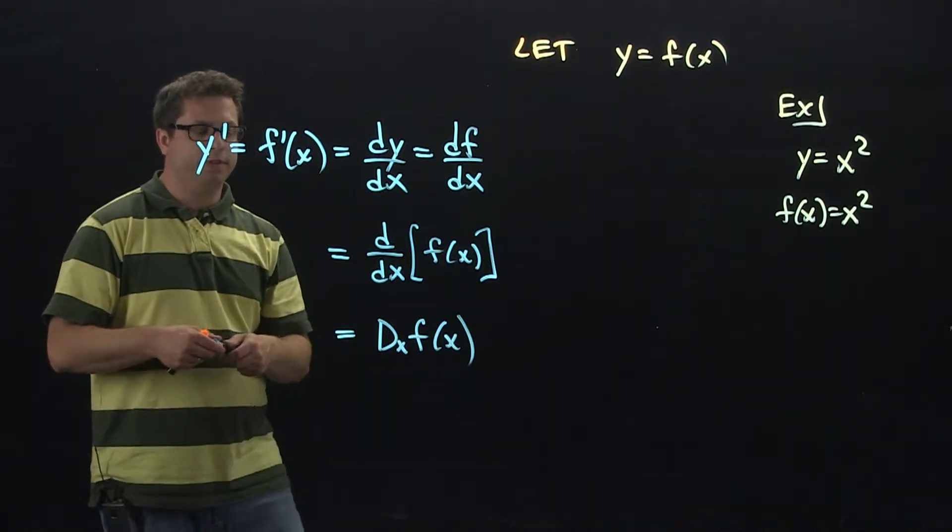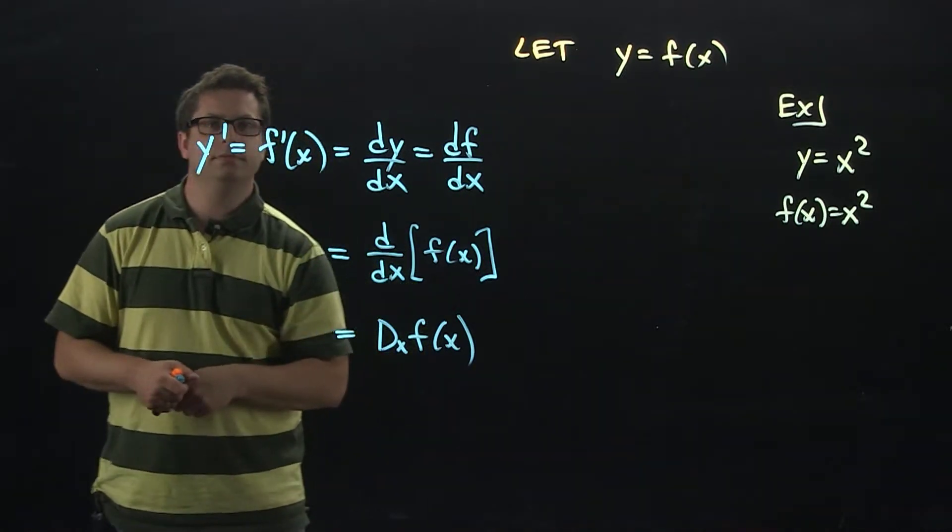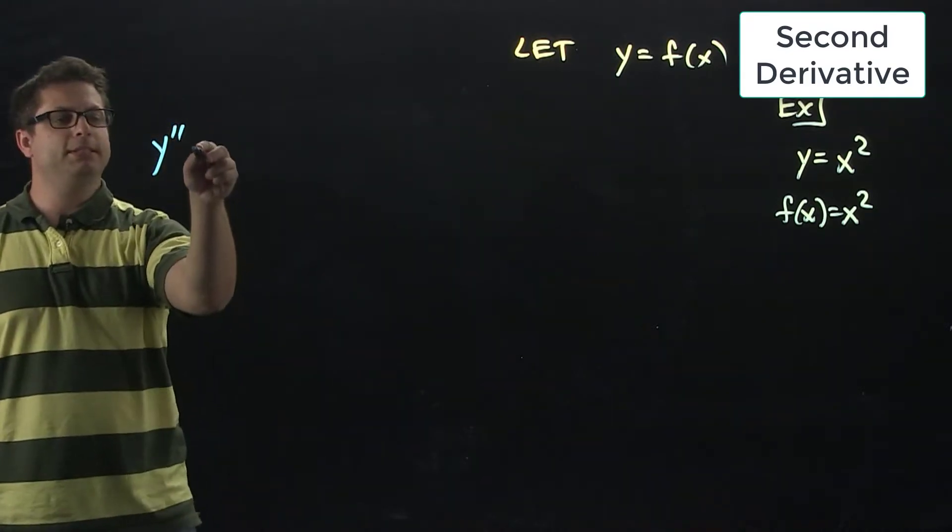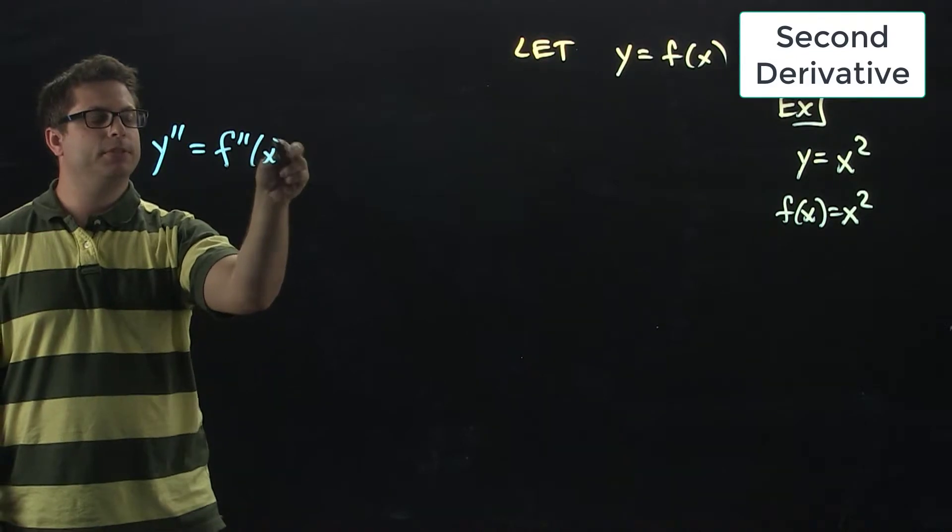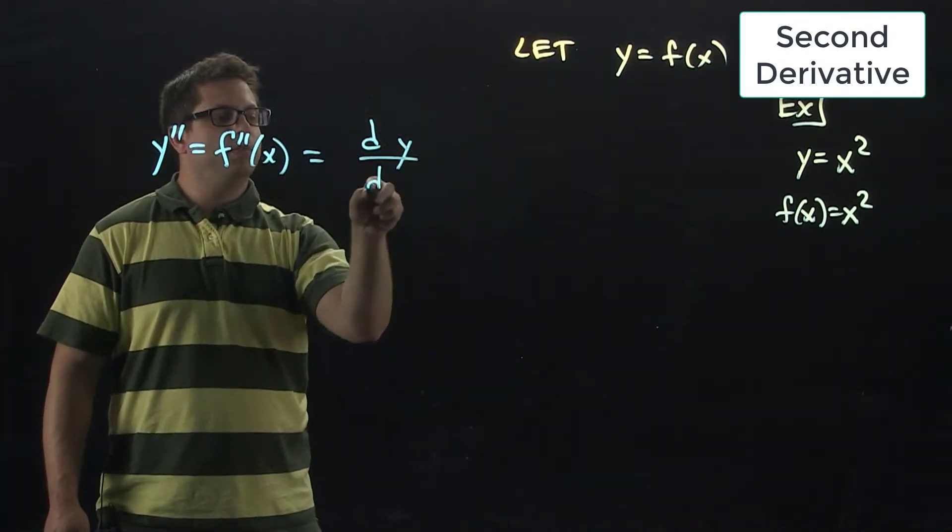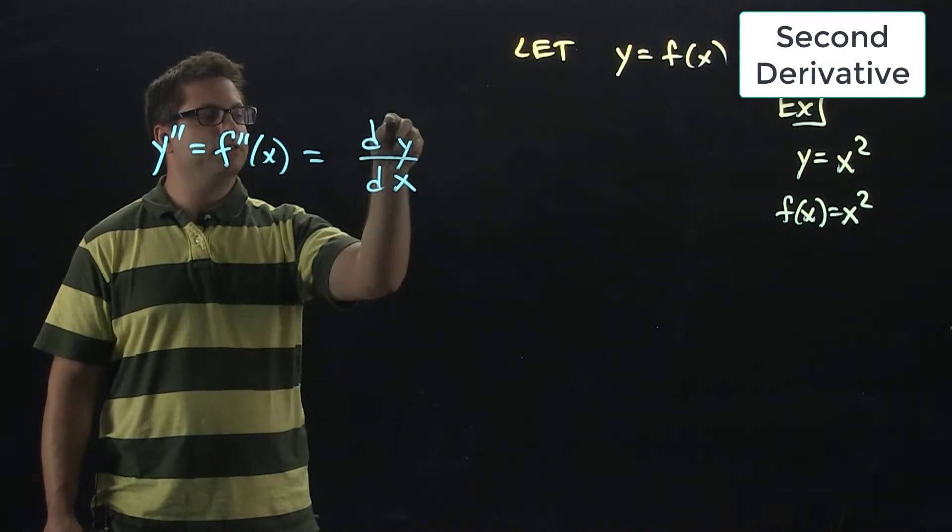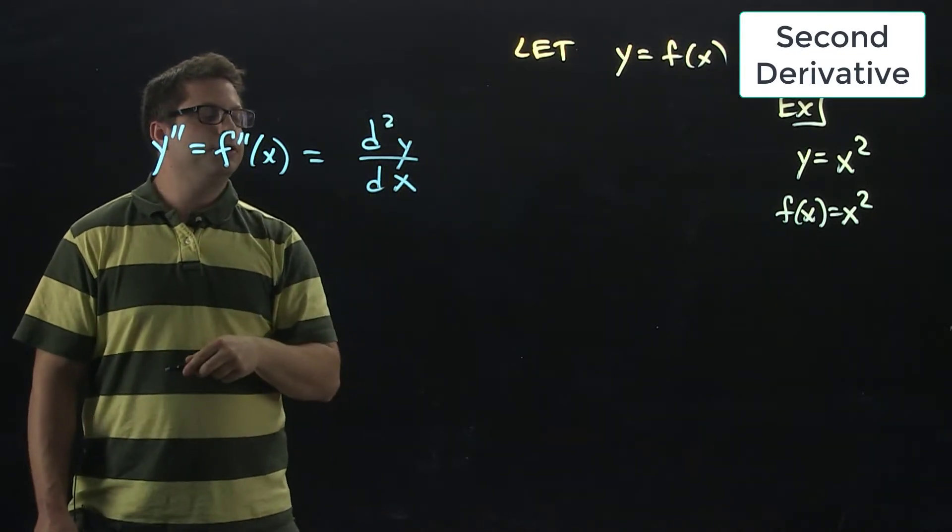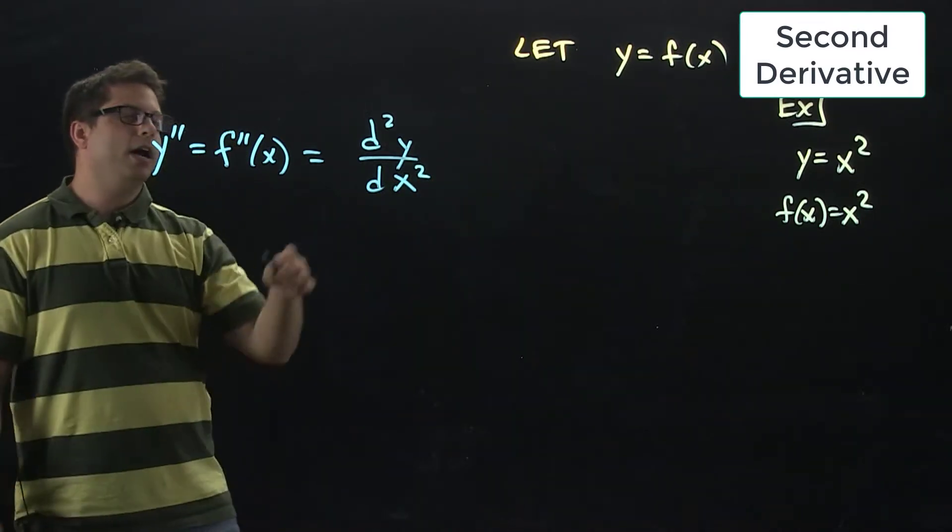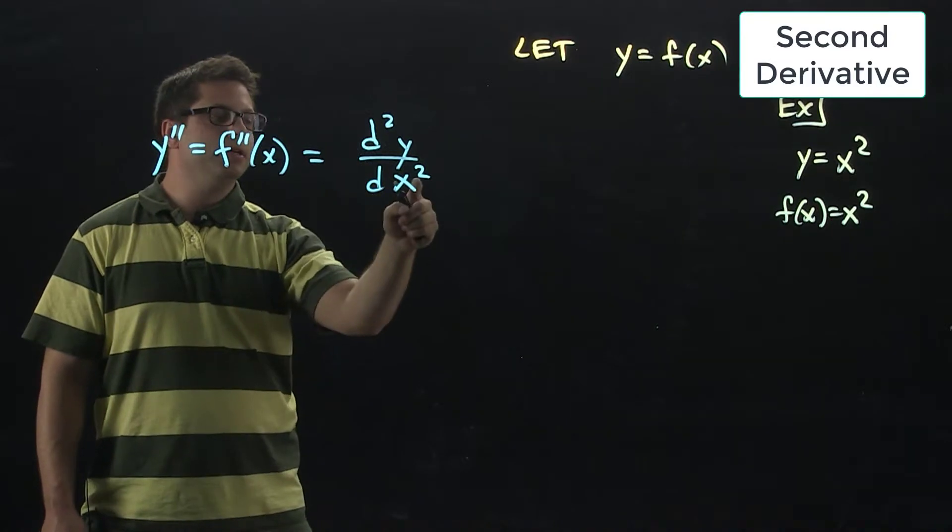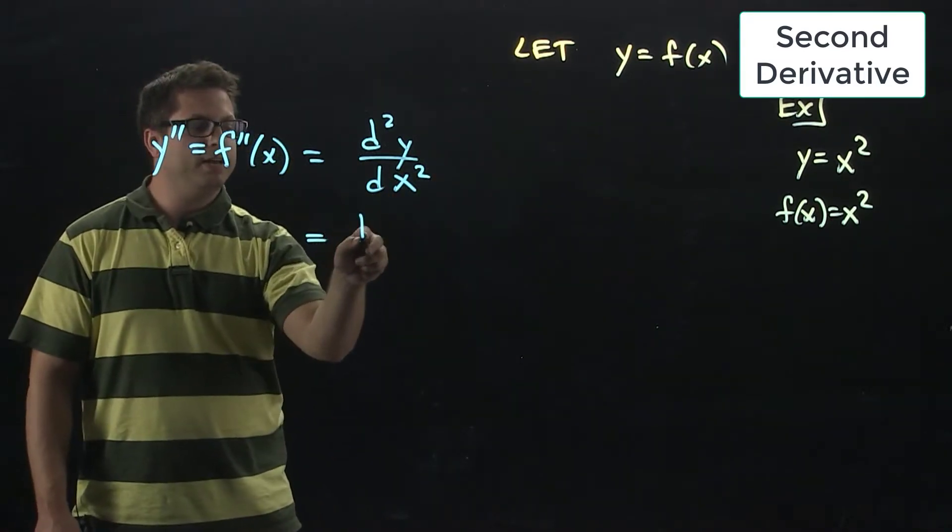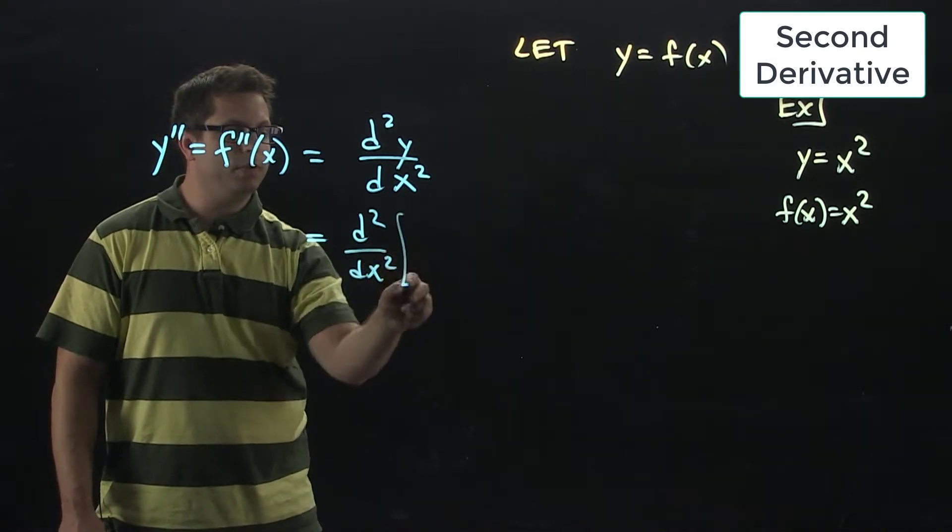If I wanted to go on to the second derivative, here's what we would have. Y, but now with two little primes, so this would be the second derivative. You'd have f with two little primes. We have this notation where we had the dy dx, but if you're doing the second derivative, you'd put a little 2 there and then 2 there that would indicate the second derivative. Just remember to put the 2 on the d on top, but then on the bottom put the 2 after the x.